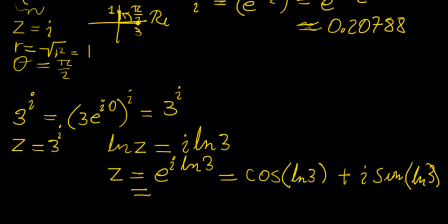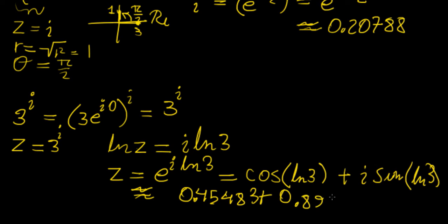If you evaluate this, you can approximate it as 0.45483 + 0.8906i. So you have basically evaluated 3^i and obtained a complex number as the result, simply by this straightforward manipulation. This is the more general technique for evaluating complex numbers raised to the power of i.